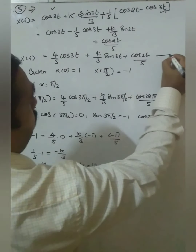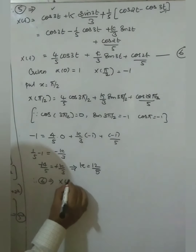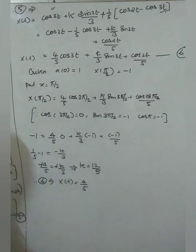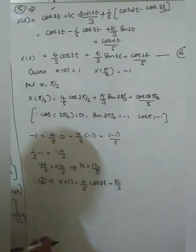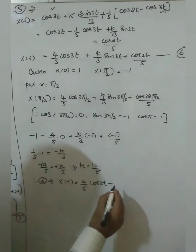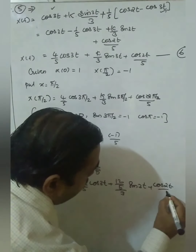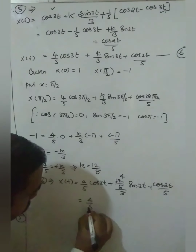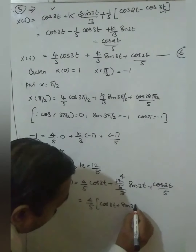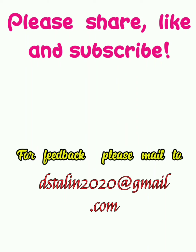Therefore, substituting k = 12/5 into the solution: x(t) = (4/5)cos 3t + (k/3)sin 3t + cos 2t over 5. Since k/3 = (12/5)/3 = 4/5, the 3 cancels, giving the final answer: x(t) = (4/5)cos 3t + (4/5)sin 3t + cos 2t over 5.